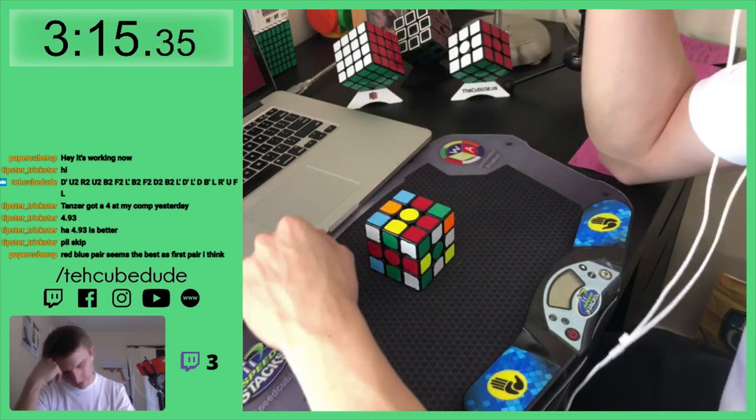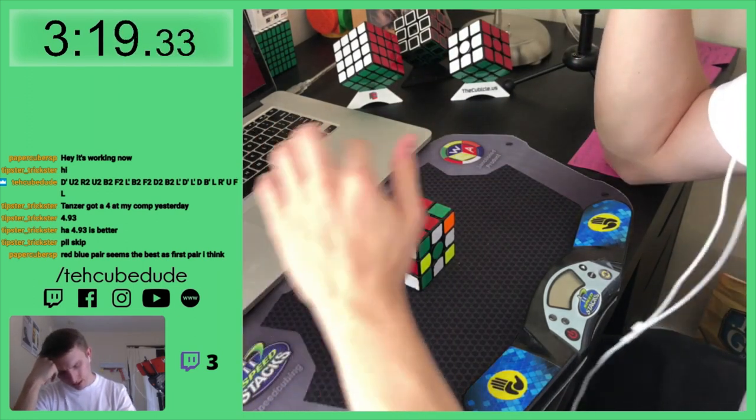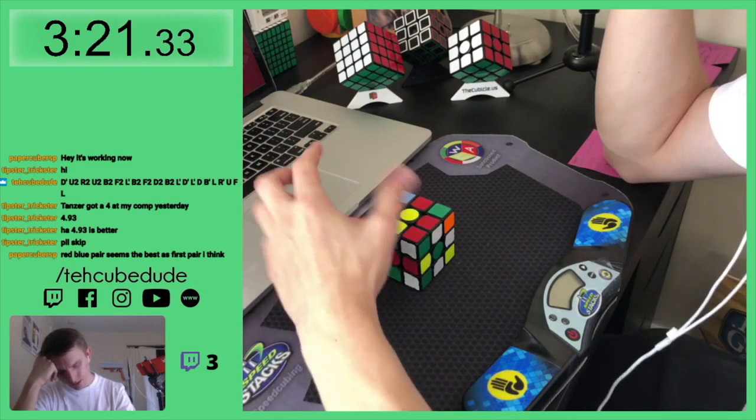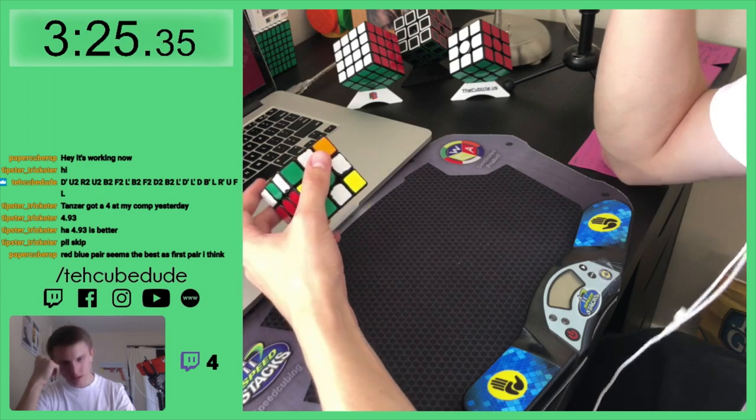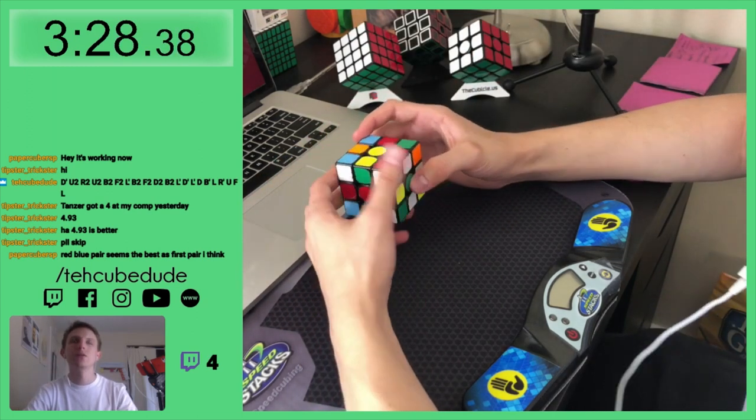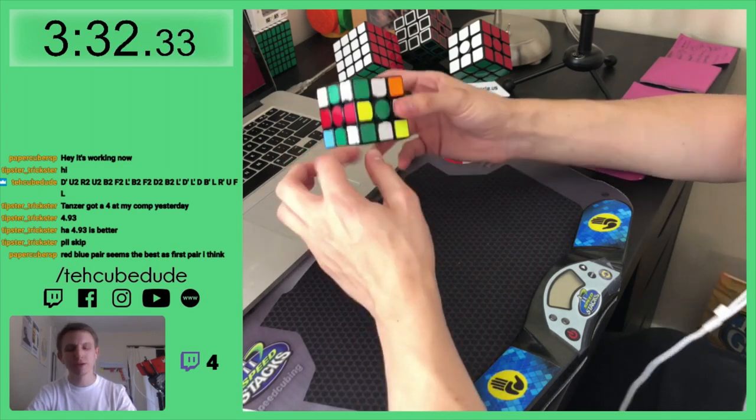So we have R prime B prime L prime R prime B prime L prime F prime D prime R prime L, and then I'm gonna do an L U2 L prime reverse sexy move. Okay, then red green should be solved.